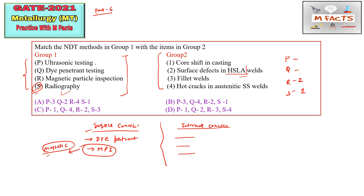Ultrasonic testing is basically done for large-shaped parts and large components. Dye penetrant test is for surface cracks, and hot cracks are surface cracks, so Q can go to 4. For ultrasonic testing you can go with fillet welds, so P is 3. We have code 3, 4, 2, 1, and options starting with other than 3 you can cross.